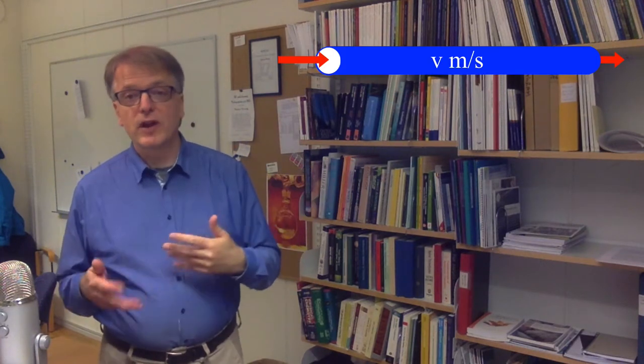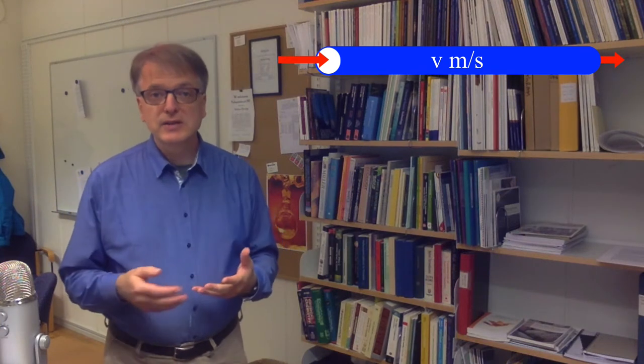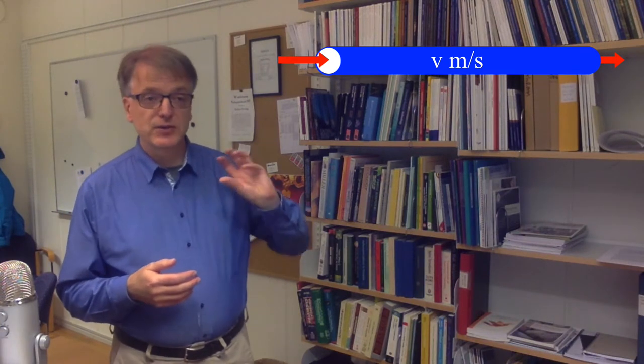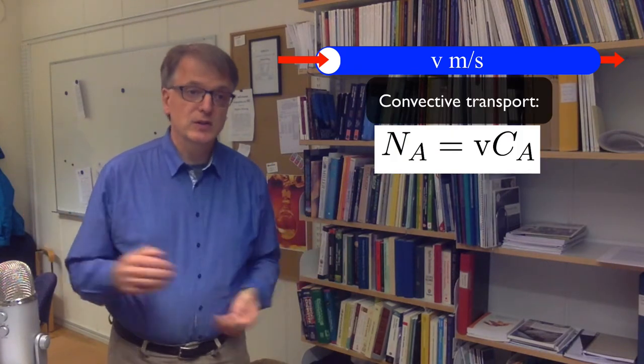So let's first repeat what we had said before. If you have convective transport in a pipe with a certain flux rate, meters per second, we can calculate the mass transfer rate, the convective mass transfer rate along that pipe, simply as the concentration times the velocity.